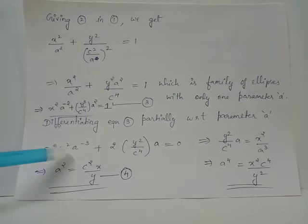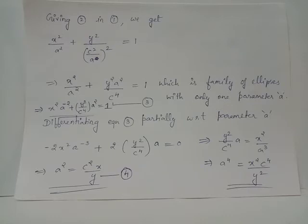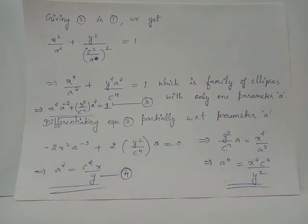Dividing both sides by 2, we get −x²·a⁻³ + y²·a/c⁴ = 0, which gives y²·a/c⁴ = x²/a³. Rearranging, a⁴ = x²c⁴/y². Taking the square root on both sides gives a² = c²x/y. Let us call this relation equation 4.